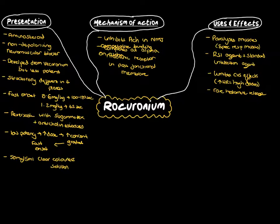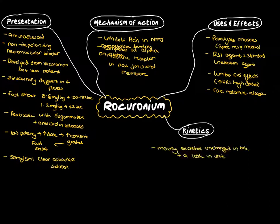From a pharmacokinetics point of view, the majority of rocuronium is excreted unchanged in the bile, and to a lesser extent the urine. There is a little bit of deacetylated metabolism that goes on.